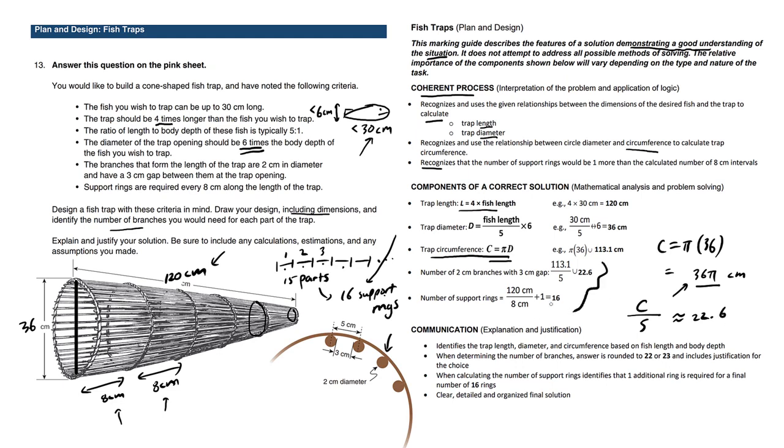So what we're discussing is all over here. So you have to somehow communicate this as well, not just randomly writing numbers all over the place. So we described the features of a solution demonstrating a good understanding of the situation. Now it's up to you to actually put this all together with neat handwriting in a coherent manner. Good luck.